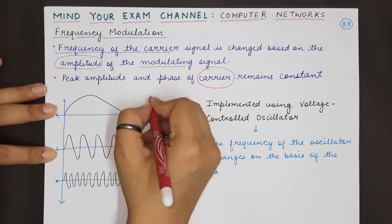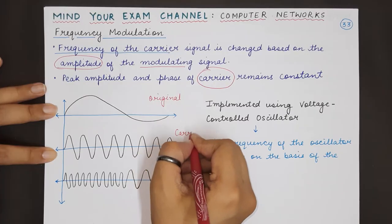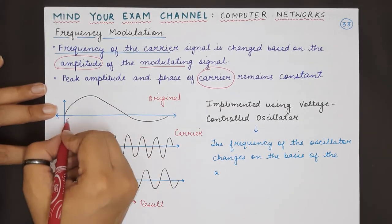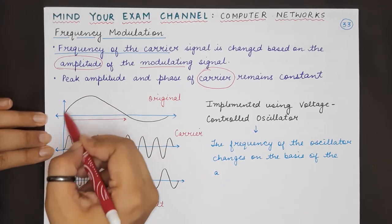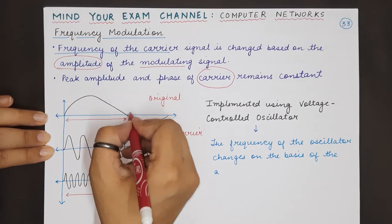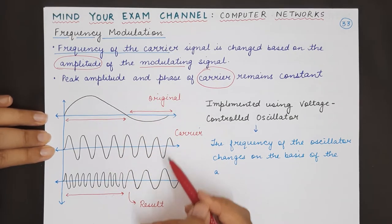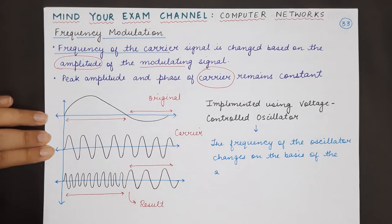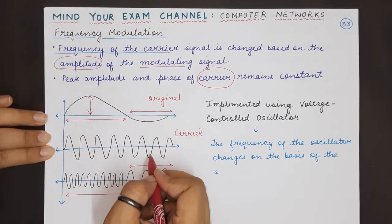Let's take an example. This is the original analog signal that we want to transmit. This is the carrier signal, and this is the resulting signal after performing frequency modulation. In this region, when the amplitude of the original signal is high, the frequency of the carrier signal would be increased. In this region, when the amplitude of the original signal has been reduced, the frequency of the carrier signal would also be reduced compared to when the amplitude was higher. So for the original wave we check the amplitude, and for the carrier wave we change the frequency.